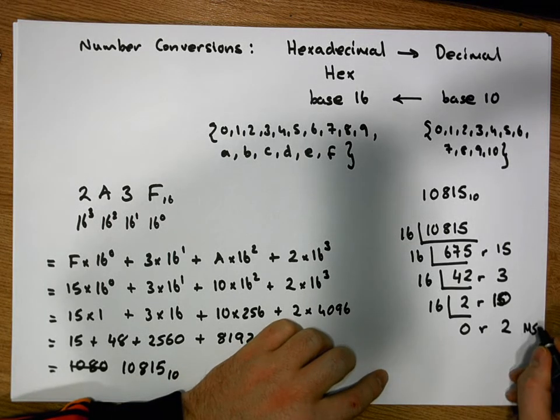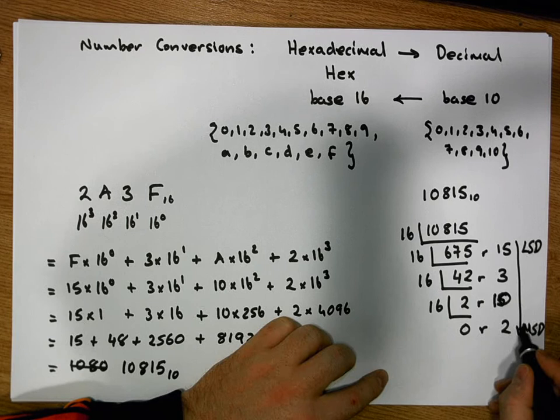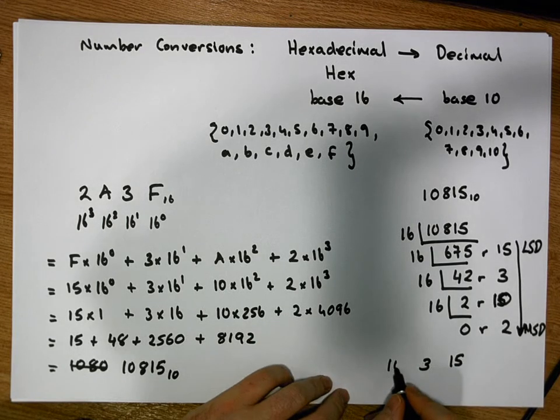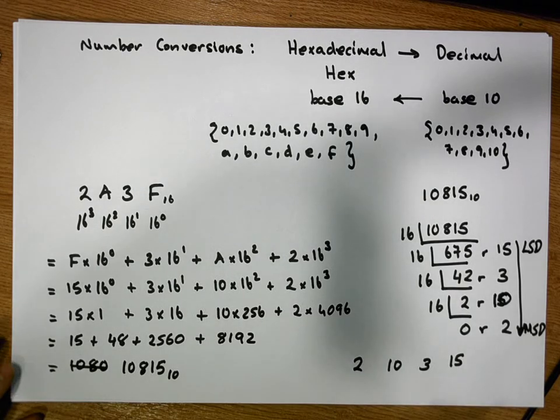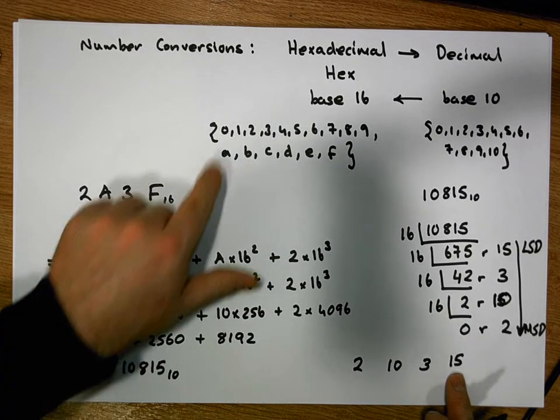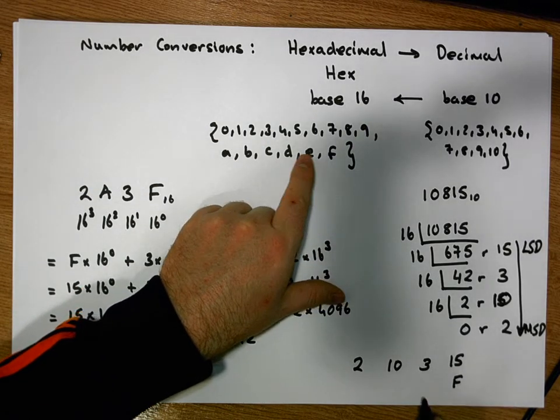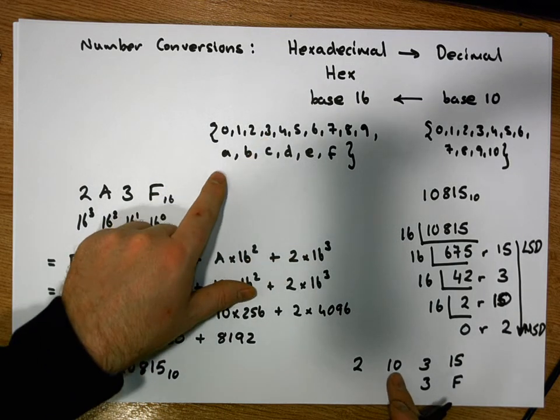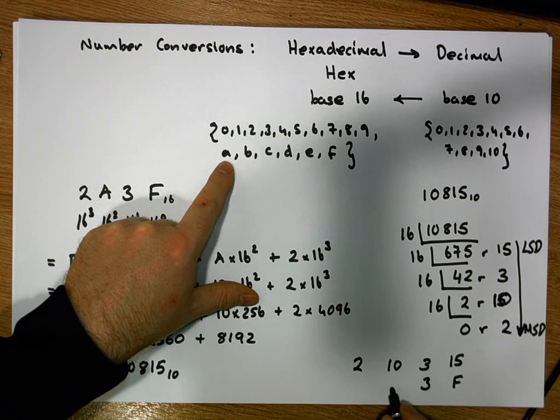When we move from here to here we end up with the number 2, 10, 3, 15. Each one of these represents a digit within our new system, within hexadecimal. But we know that the 15th digit is the symbol F, 3 is 3, the 10th digit in the system is A, and 2 represents 2. So this is our new number in base 16.